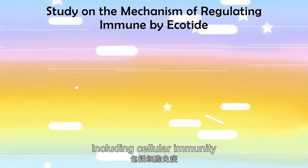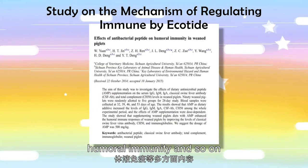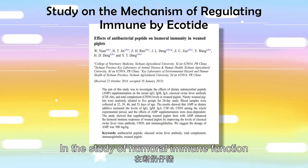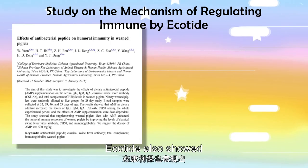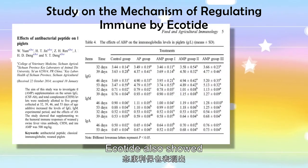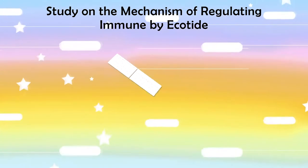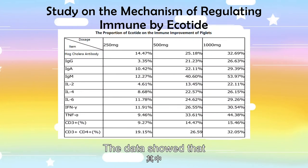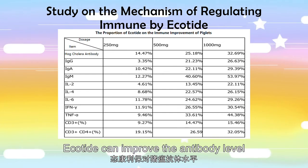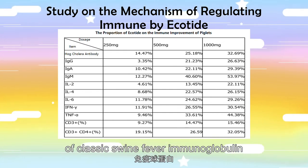The study comprehensively evaluated the effect of Equotide on the immune function of weaned piglets, including cellular immunity, humoral immunity, and more. In the study of humoral immune function, Equotide showed the effect of improving humoral immune function, and the data showed it can improve the antibody level of classical swine fever.